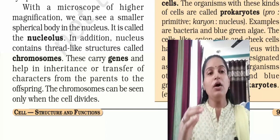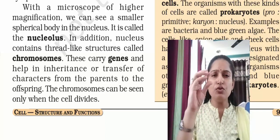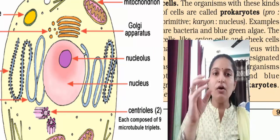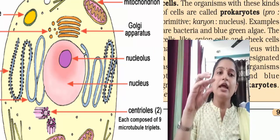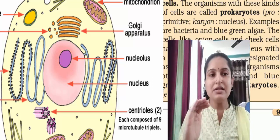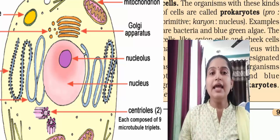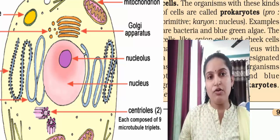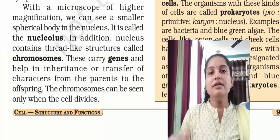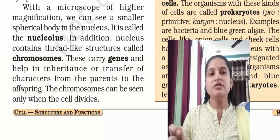If we use a very high-resolution microscope, we can see a small body inside the nucleus — just as there is a nucleus inside the cell, there is a smaller body inside the nucleus called the nucleolus. This is not visible under a normal microscope; you need a high-resolution microscope. In addition, the nucleus contains thread-like structures called chromosomes.